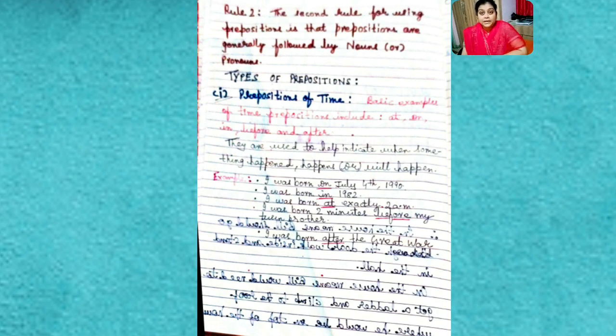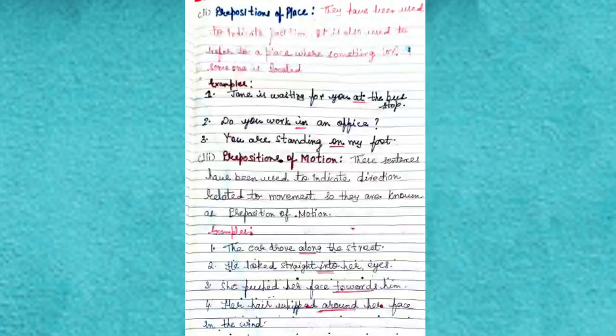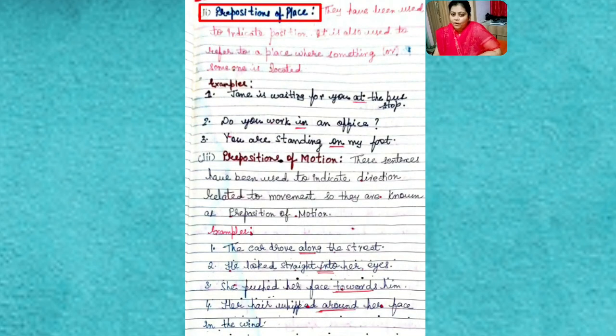I was born, I was born, I was born. Now here I'm using the same sentence but I am just changing the set of prepositions. In the first sentence I have used 'on,' in the second I have used 'in,' 'at,' 'before,' and 'after.' This shows time—when. July 4th? In 1990? At exactly? Before and after. So it is showing when—after the great world war, before my twin brother. That we come to know by preposition of time. Next one, students: preposition of place.